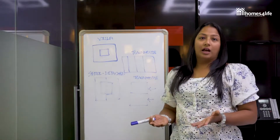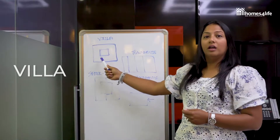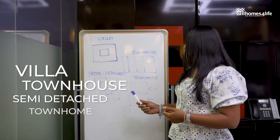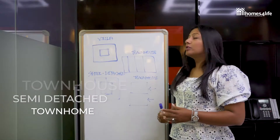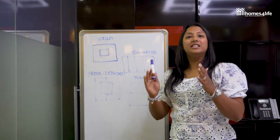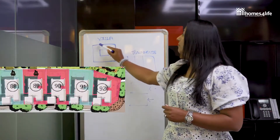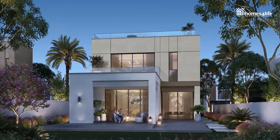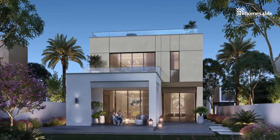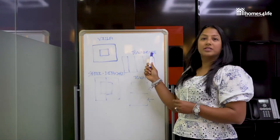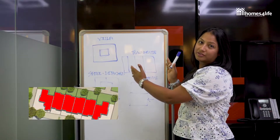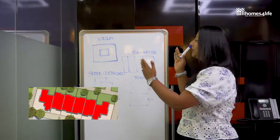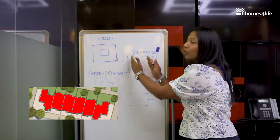The first stop is a villa. What is the difference between a villa, a townhouse, a semi-detached unit, or a townhome? A villa is an independent unit — you have a plot and on that plot you have a villa, which is a standalone independent unit. A townhouse, however, would be a cluster of villas — it can be a cluster of four, six, or eight — and they would all be adjoining and attached to each other.